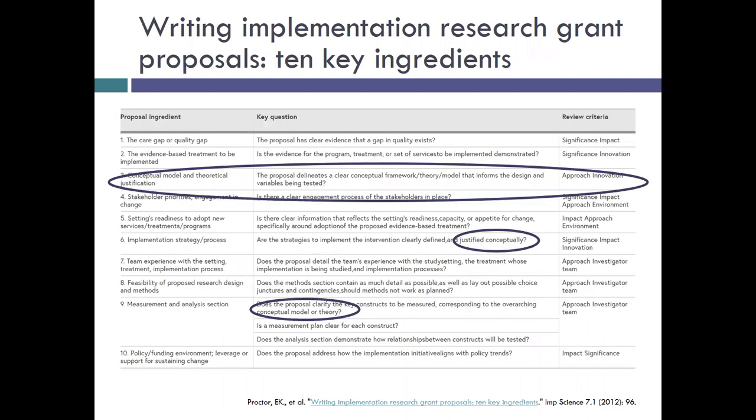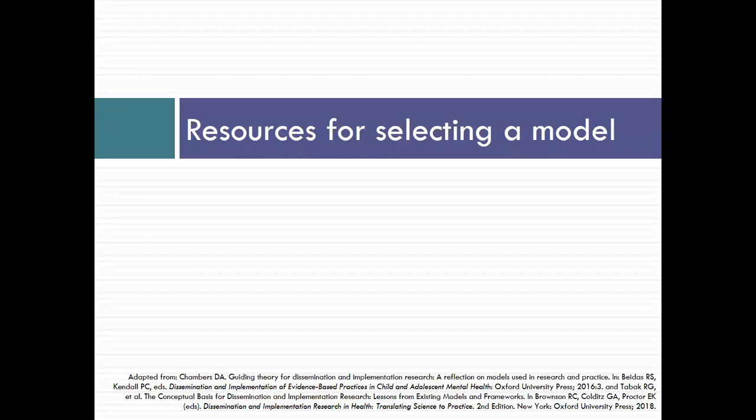A practical reason for why these are important is related to funding. Looking at Enola Proctor's 10 key ingredients paper, a conceptual model and theoretical justification is a specific ingredient for success, but is also evident in several of the other ingredients. So, given the importance of including a model in your study, how do you select one?